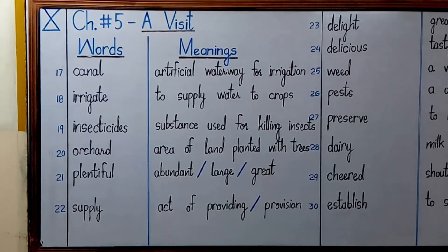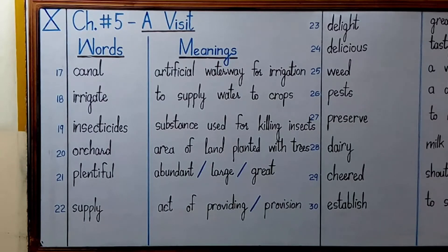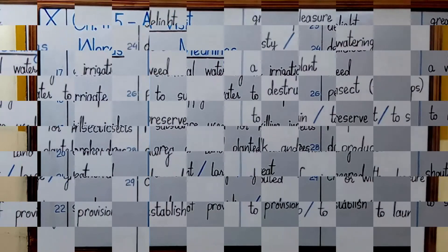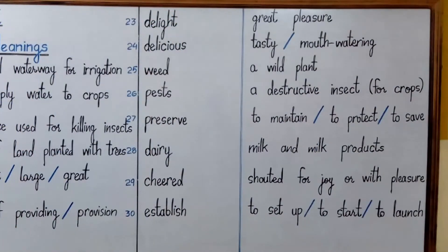Number twenty-two is 'supply', which means an act of providing something, or in simple words, provision. Number twenty-three is 'delight', which means great pleasure.